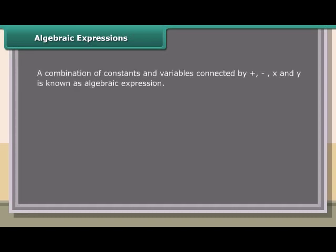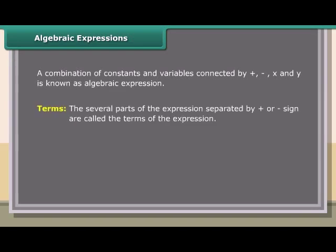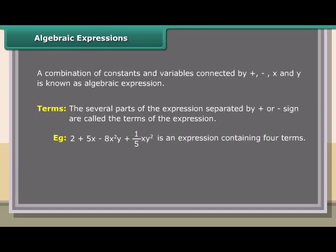Algebraic Expressions: a combination of constants and variables connected by plus, minus, multiplication, and division is known as an algebraic expression. Terms: the several parts of an expression separated by a plus or minus sign are called the terms of the expression. Example: 2 plus 5x minus 8x²y plus (1/5)xy² is an expression containing 4 terms: 2, 5x, minus 8x²y, and (1/5)xy².